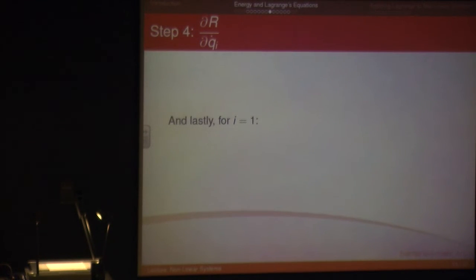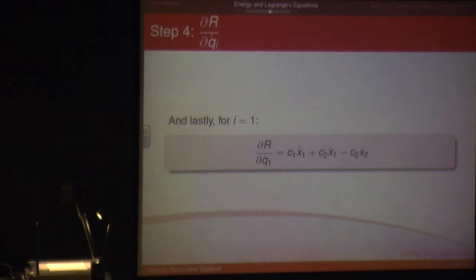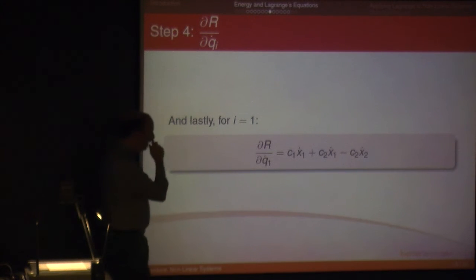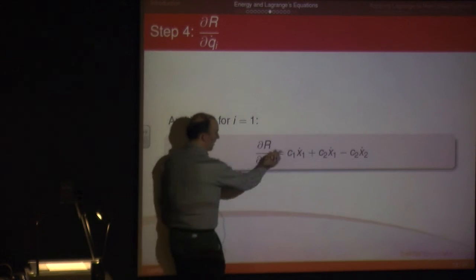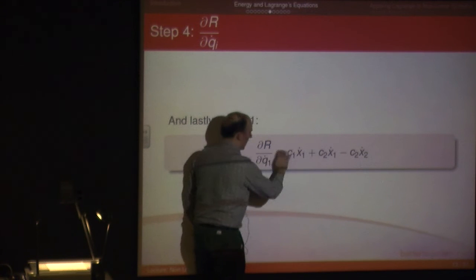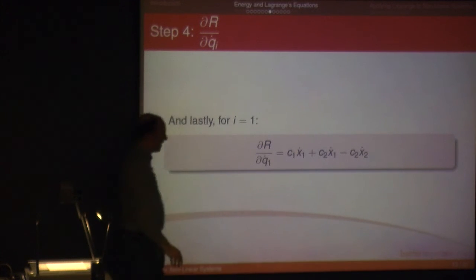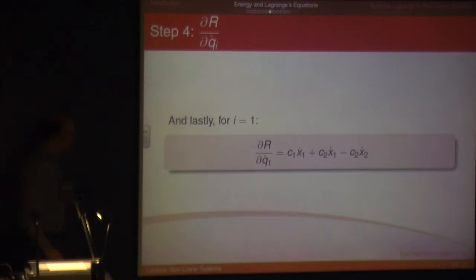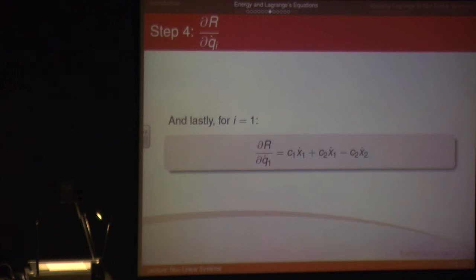For DR over DX1-dot, you don't deal with L this time — you just look at R. The same process applies: the 2's come down, you get rid of the halves and the squared terms, and you end up with the damping expression.